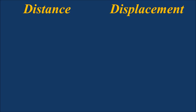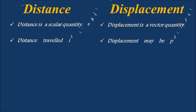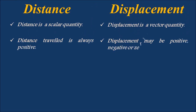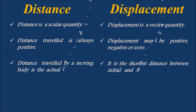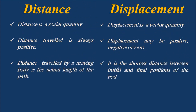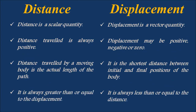Distance is always greater than or equal to displacement. Distance is a scalar quantity, whereas displacement is a vector quantity. Distance traveled is always positive, whereas displacement may be positive, negative, or zero. Distance traveled by a moving body is the actual length of the path, whereas displacement is the shortest distance between initial and final positions.